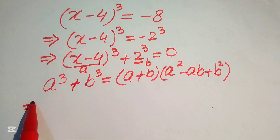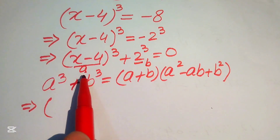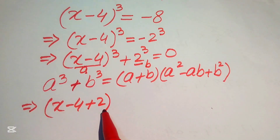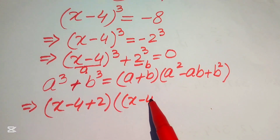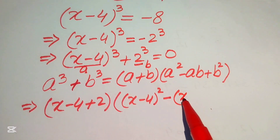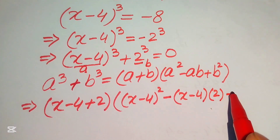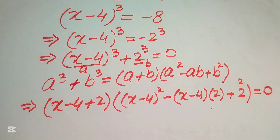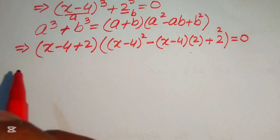We substitute these values of a and b into the formula. The first factor is (a + b) = (x - 4 + 2). Then we have (a² - ab + b²), which becomes (x - 4)² - (x - 4)(2) + 2² = 0.